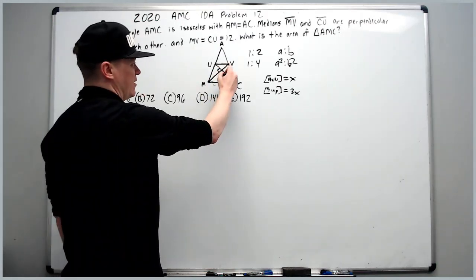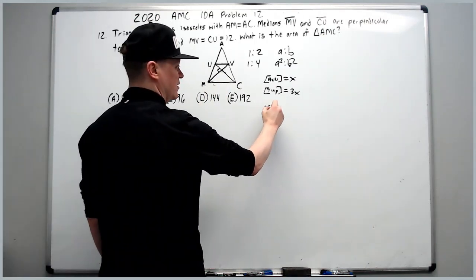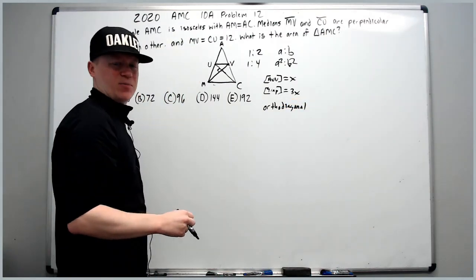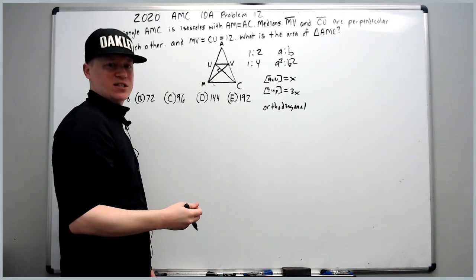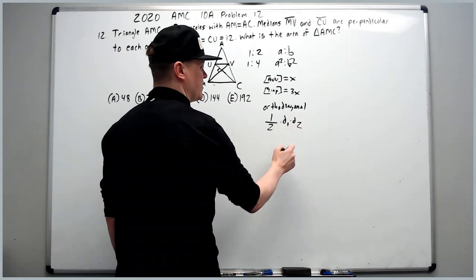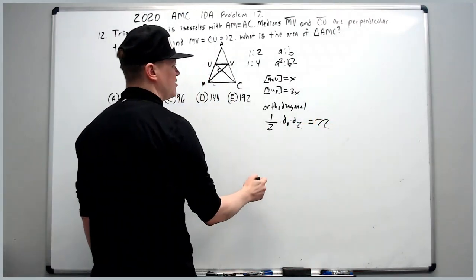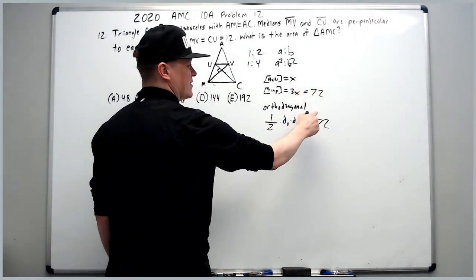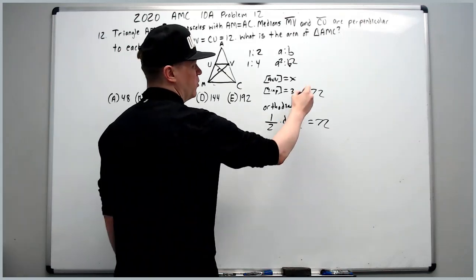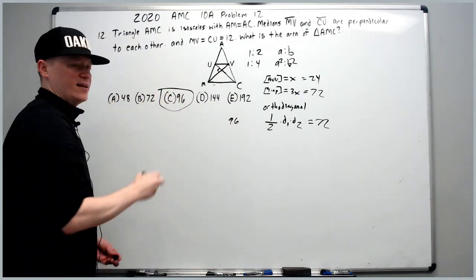Now we have a trapezoid that is what we call orthodiagonal. Orthodiagonals have a property where the area is just half the product of the diagonals: half times D1 times D2. Since both of our diagonals are 12, this comes out to 72, which means 3X equals 72, so X is 24. Adding 24, the whole triangle has area 96.